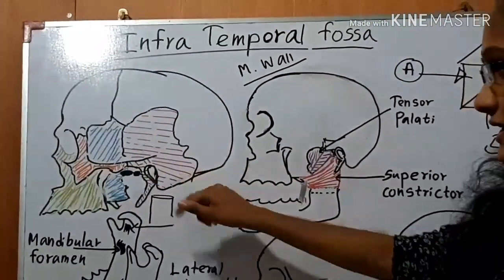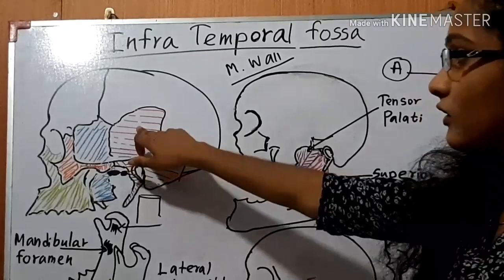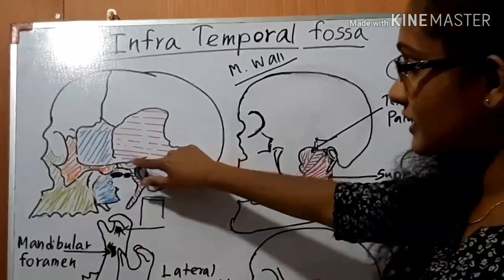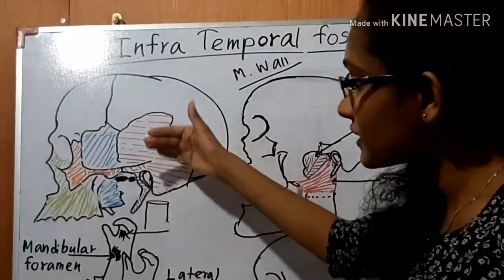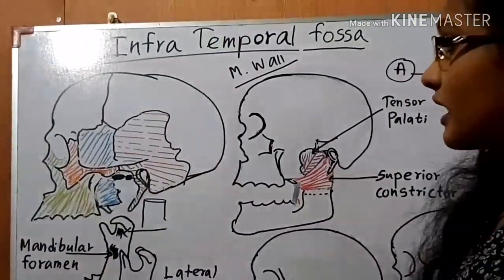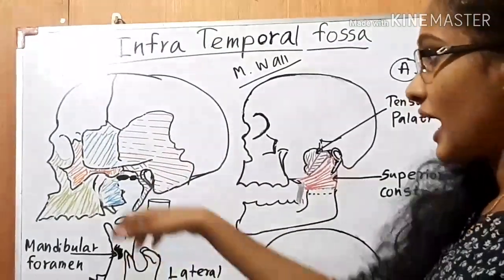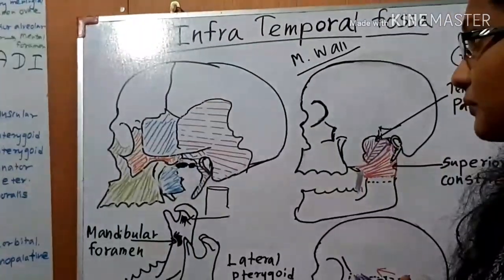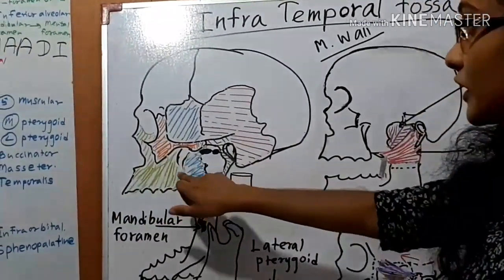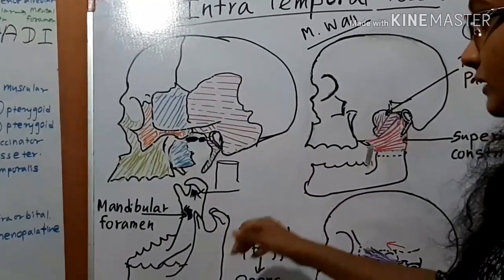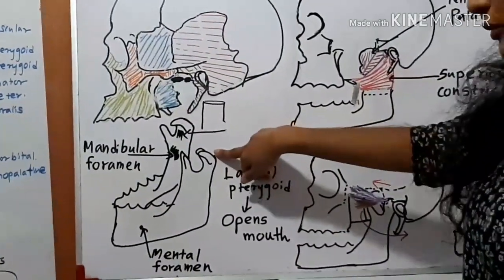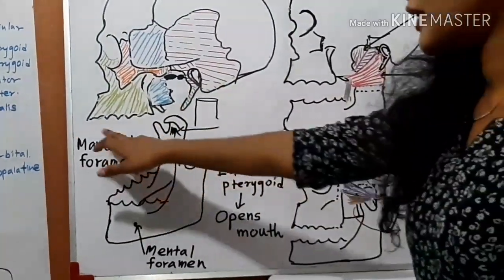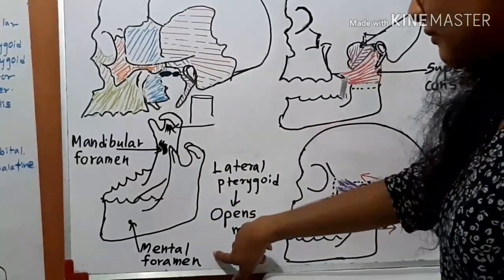This red colored bone is called the temporal bone. This part above is called the squamous part of the temporal bone, this one the mastoid process, this one the styloid process, and this is the zygomatic process of the temporal bone, which together with the temporal process of the zygomatic bone forms the zygomatic arch. The blue colored bone is called the sphenoid bone — this part above is the greater wing of the sphenoid, and this part is the lateral pterygoid plate. In the maxillary bone, this is the maxillary tuberosity. Finally, in the mandible we need to know the head of the condyloid process, neck of the mandible, coronoid process, and two important foramina: the mandibular foramen located inside and the mental foramen located outside.